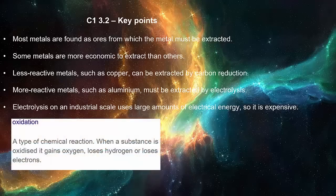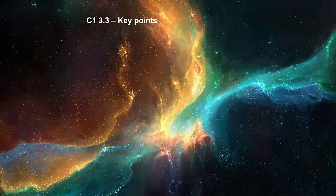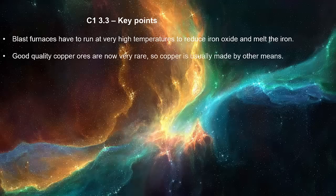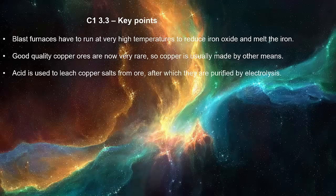Oxidation is a type of chemical reaction. When a substance is oxidized, it gains oxygen, loses hydrogen, or loses electrons. Blast furnaces have to run at very high temperatures to reduce iron oxide and melt the iron. Good quality copper ores are now very rare, so copper is usually made by other means. Acid is used to leach copper salts from ore, after which they are purified by electrolysis.